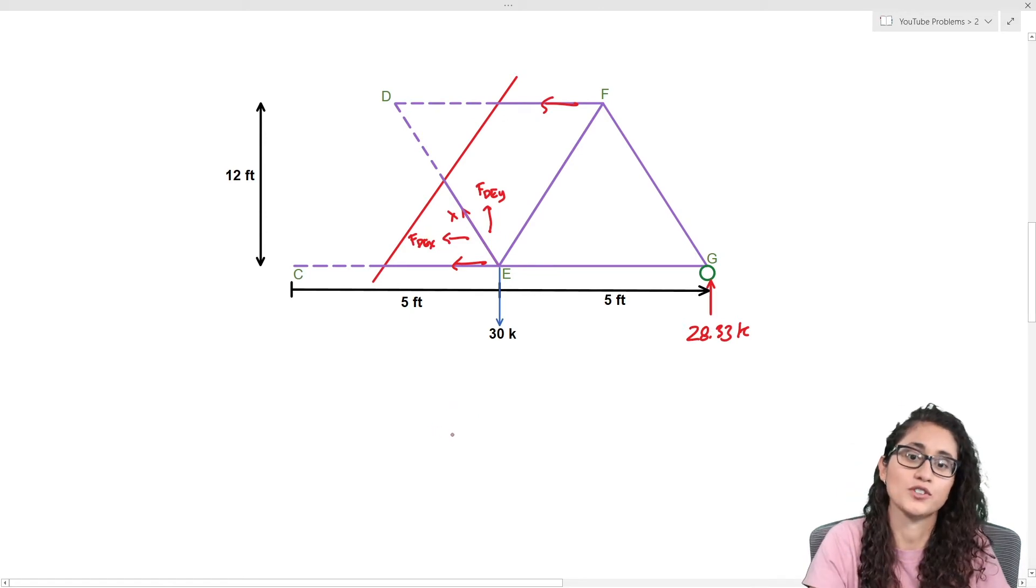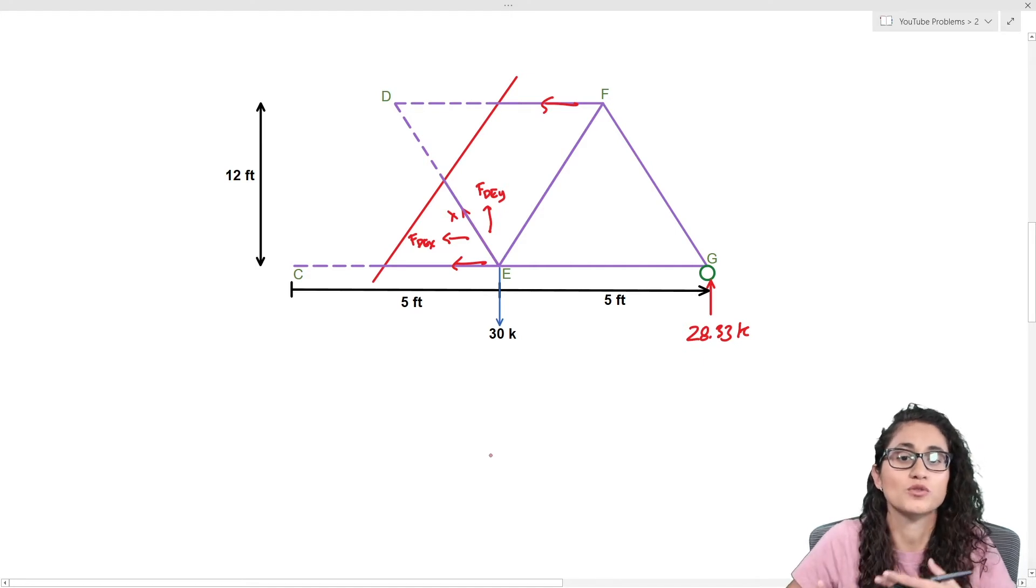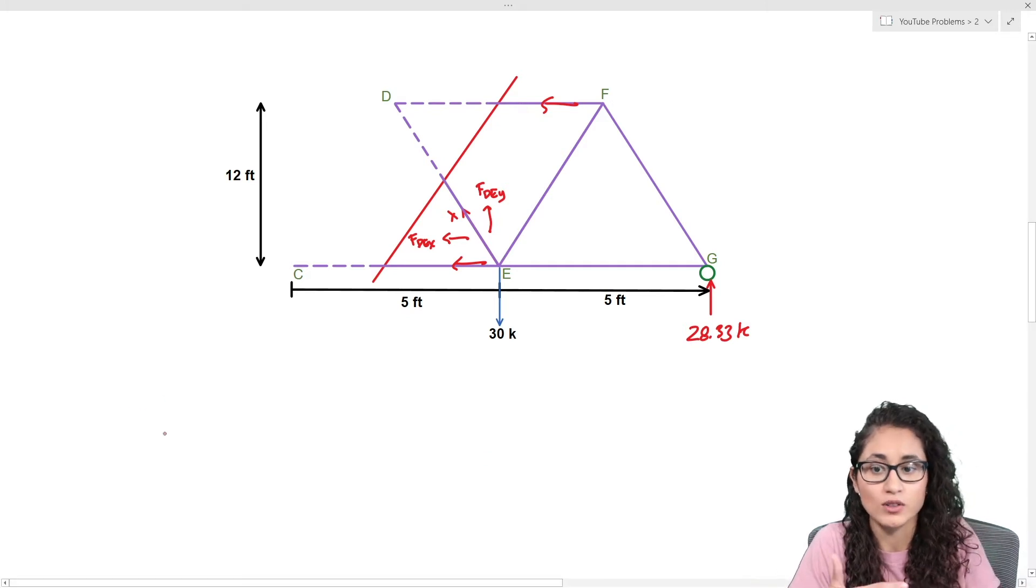If we take a look at the forces that we have here, note that we have three unknowns in the X direction and we only have one unknown in the Y direction. So it will actually be really easy if we just do the summation of the forces on the Y equals to zero and solve for the force DE.